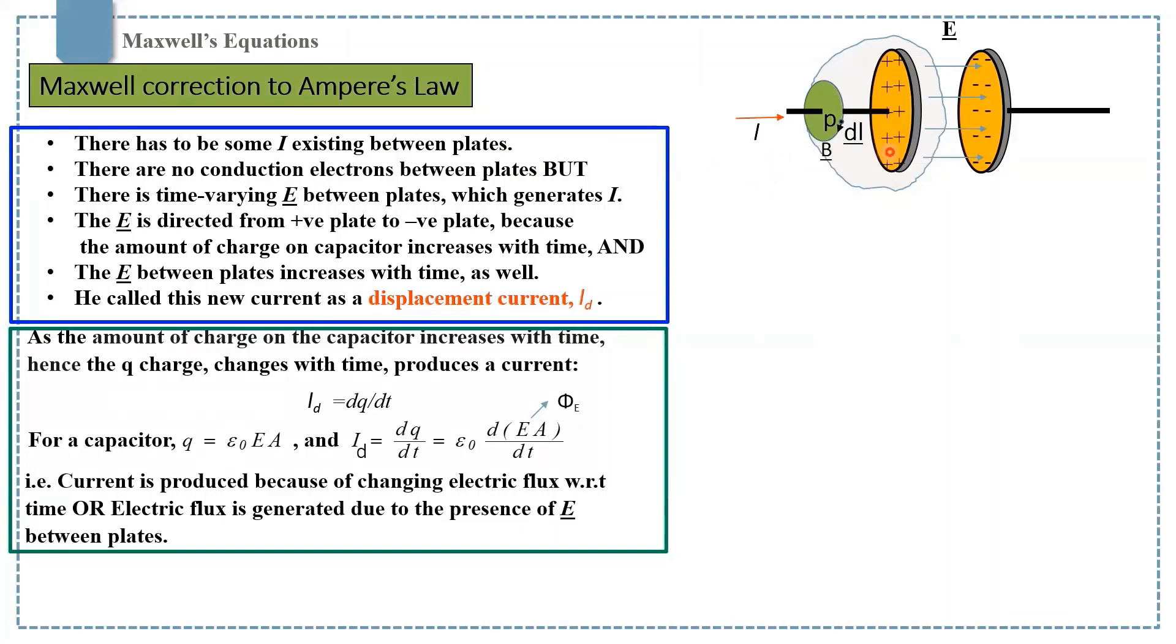It means outside of the capacitor, there is only conduction electron and no displacement current. Inside the capacitor, there is no conduction current but only displacement current.